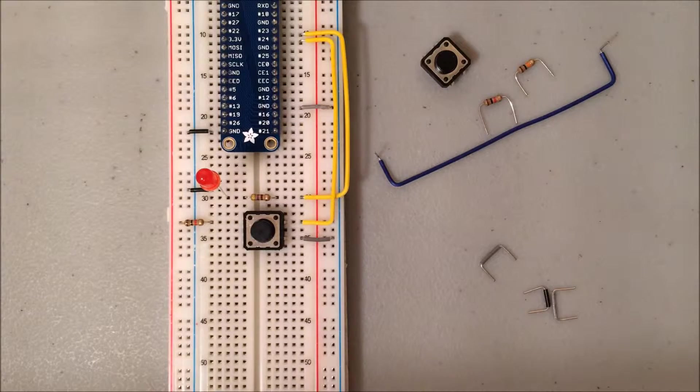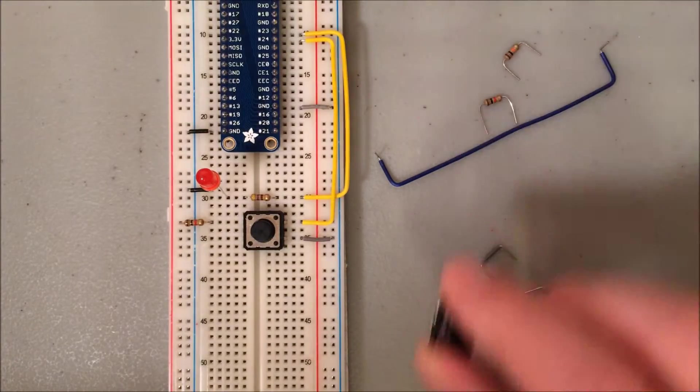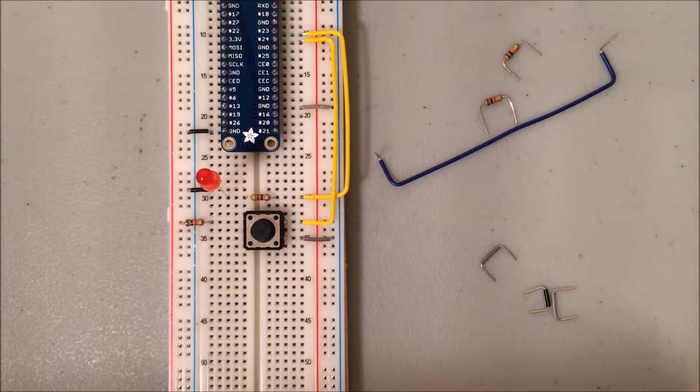Now we're going to add another button to this circuit, but this time we're going to use the pull-down resistor method. So I'm going to go ahead and drop in my button, and this button is going to land basically in rows 41 and 43.